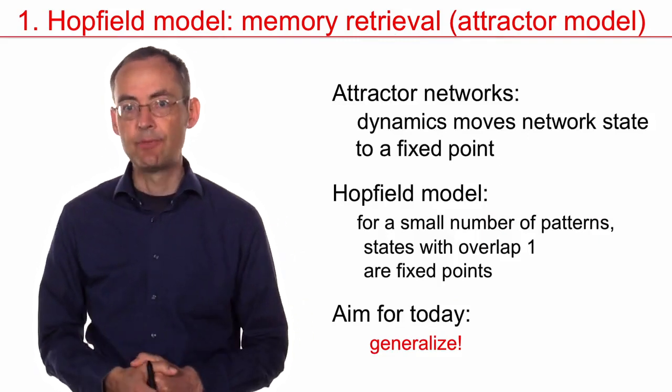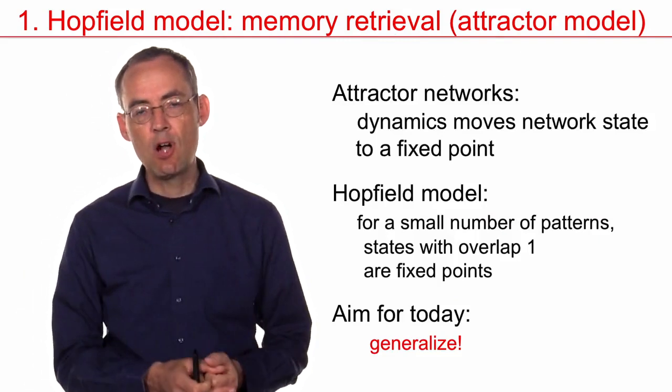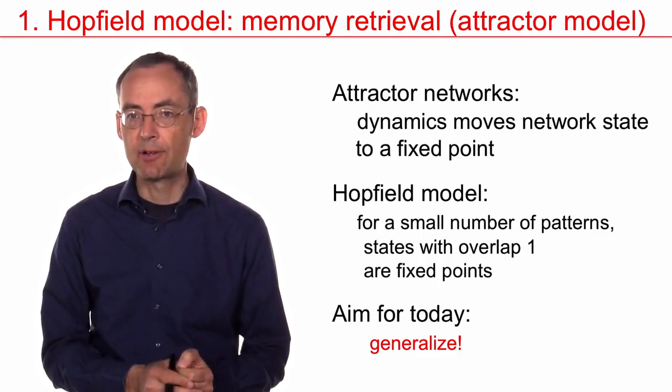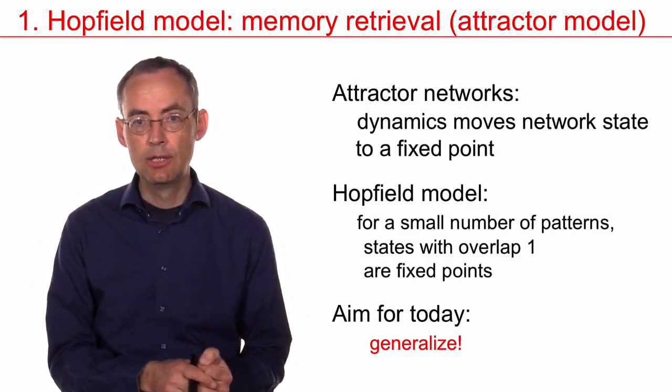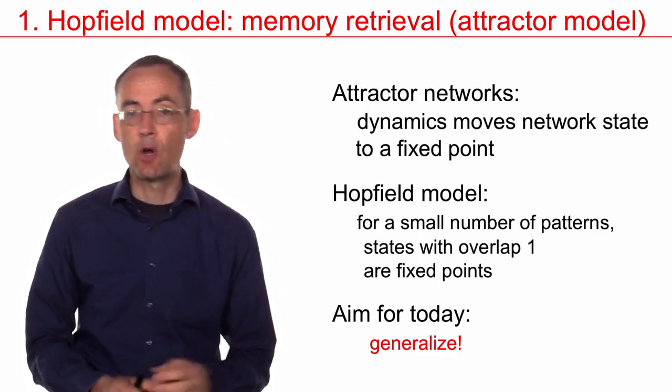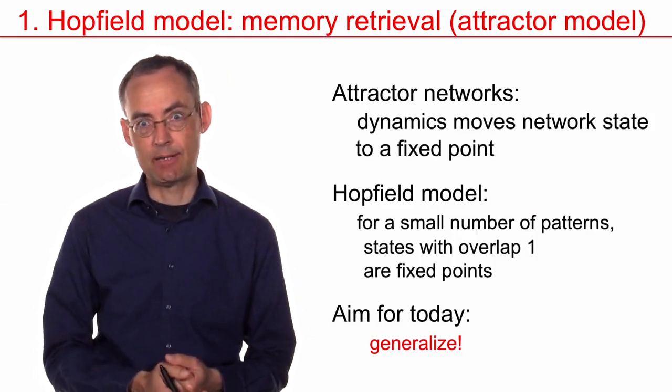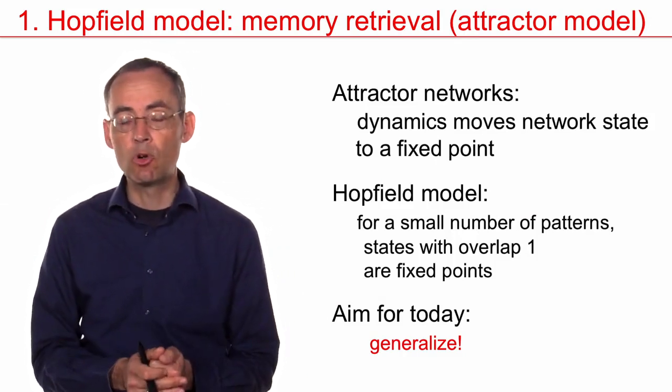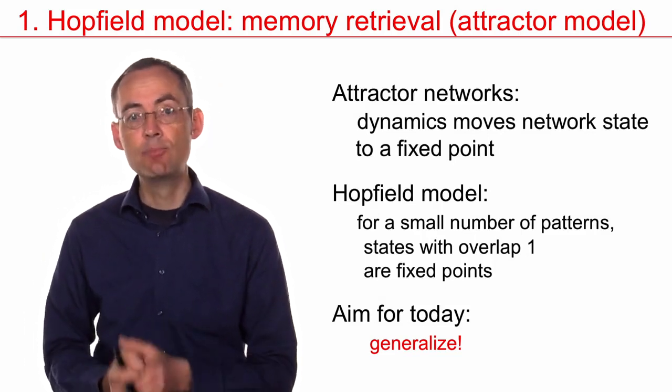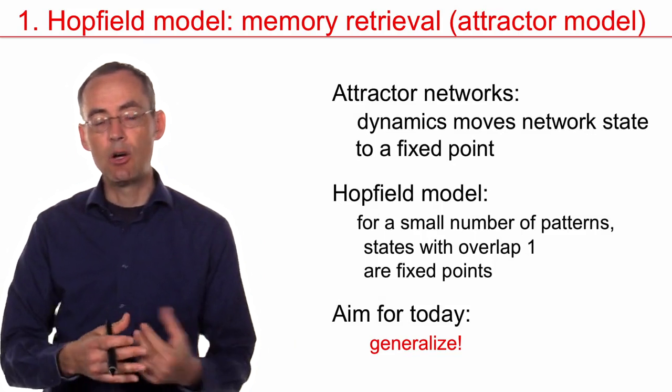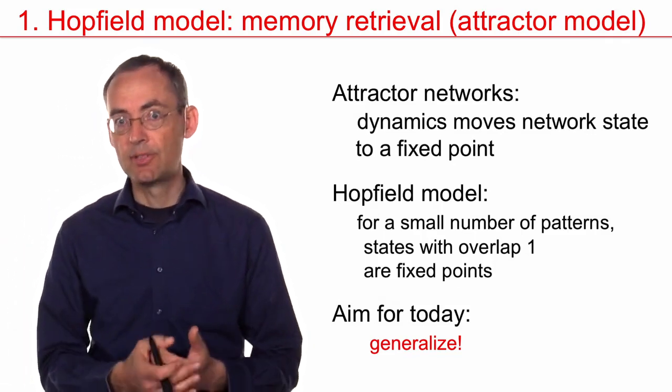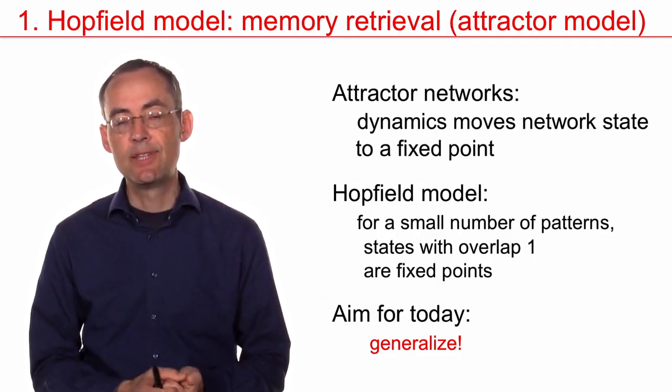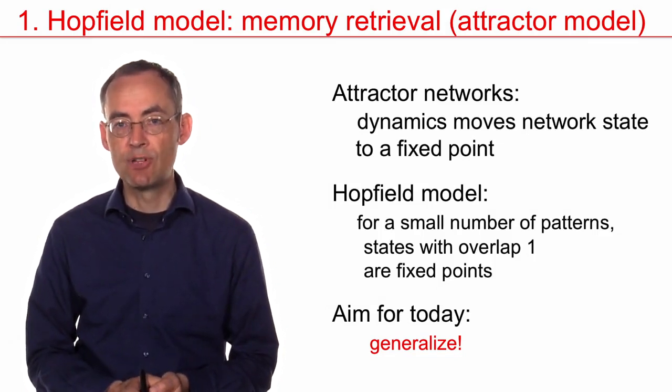So let me summarize. Attractor networks, that just means that the dynamics of the network as a whole moves towards a fixed point. And this fixed point is relevant. This fixed point represents the recall of one of the patterns. For orthogonal patterns in the Hopfield model, we found last week that this fixed point sits at an overlap of 1, which means perfect retrieval of the pattern. Of course if I load many many patterns into the same network, I have this additional noise term caused by the random walk, so that the overlap may not be exactly one, but in any case it moves towards a fixed point. So this concept of attractor networks is much more general than the concept of the specific instance Hopfield model that we saw last week. And it's in this context that we will look at different generalizations of the Hopfield model in the following lectures.